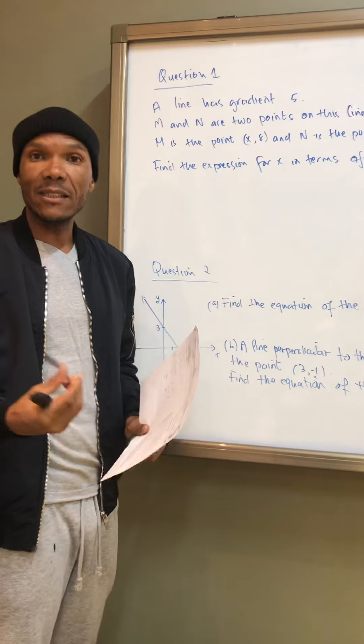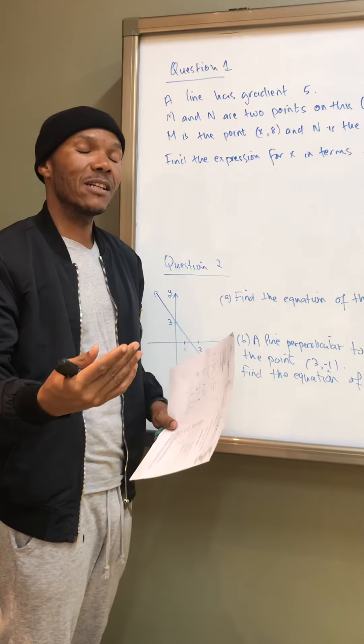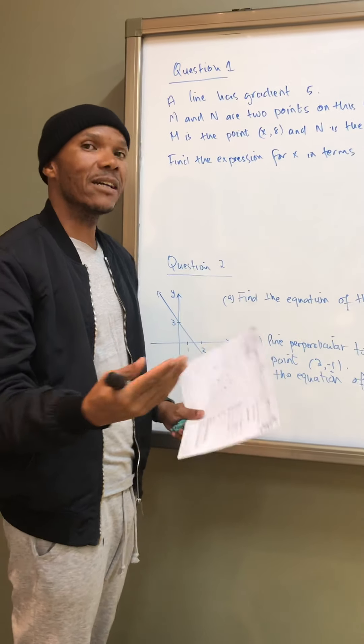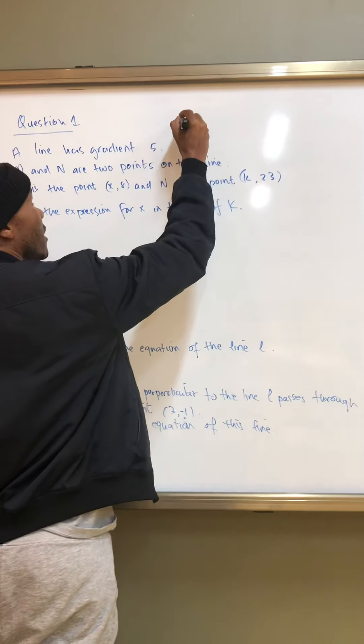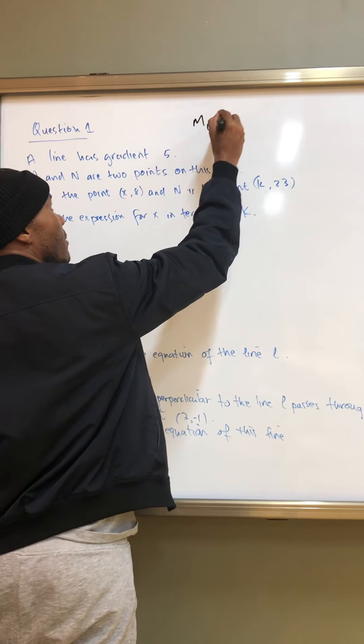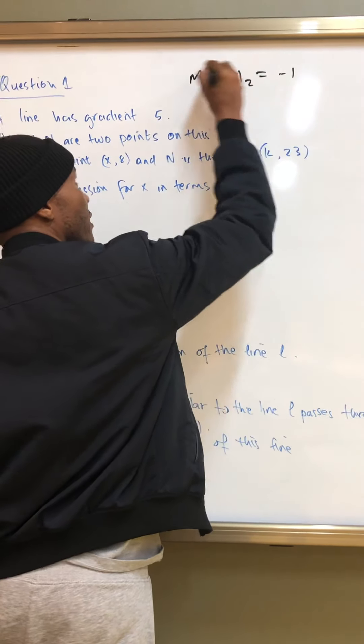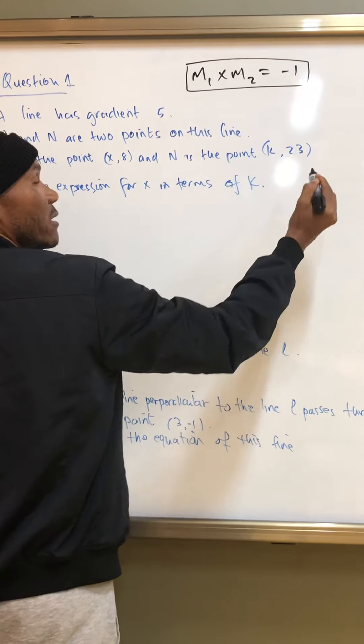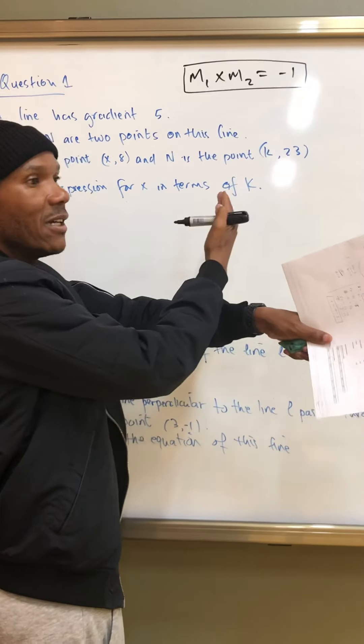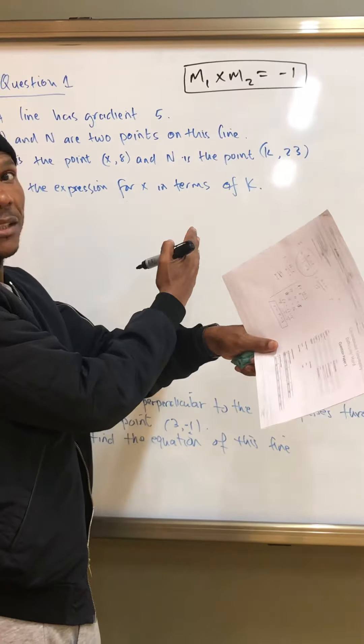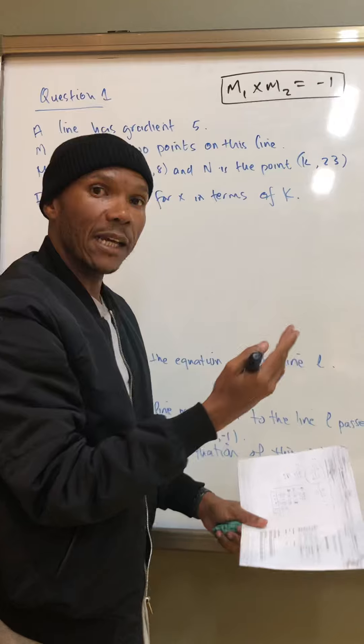I think it will be important for me to stress that just before we start that m1 times m2 is equal to negative 1. That's for perpendicular lines. This is for perpendicular lines. The two lines, if two lines are meeting at 90 degrees, that means their gradients, the product of their gradients should be negative 1.